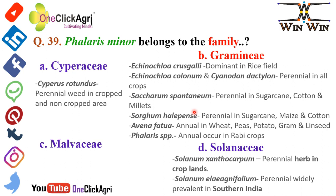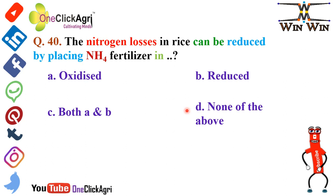The other options: the Cyperaceae family contains Cyperus rotundus, which is a perennial weed in both cropped and non-cropped areas. The Solanaceae family contains Solanum xanthocarpum, a perennial herb in crop plants, and Solanum elaeagnifolium, a perennial weed widely prevalent in southern India — please remember this.